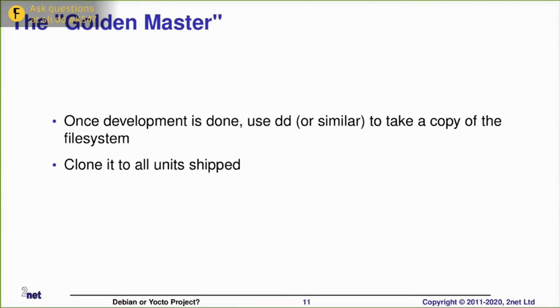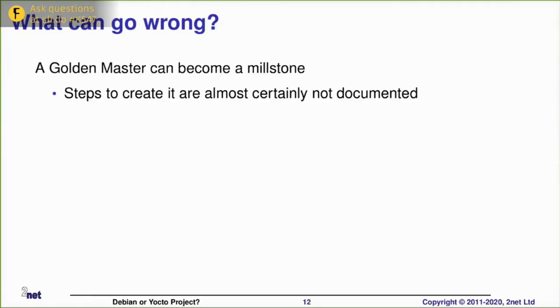I take my golden master and then I take a copy of it. I can just use a simple command like DD to take an exact copy of that disk image, and then use DD again to clone it to all the units that I'm shipping. So that essentially is job done.